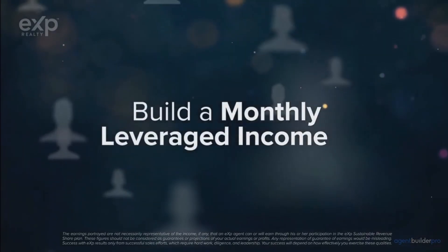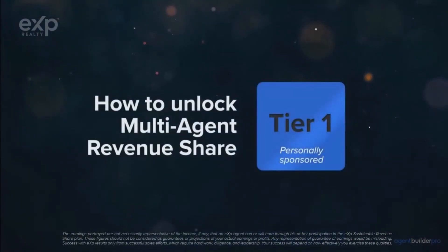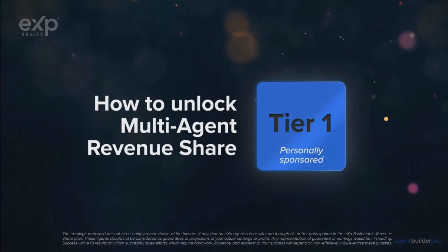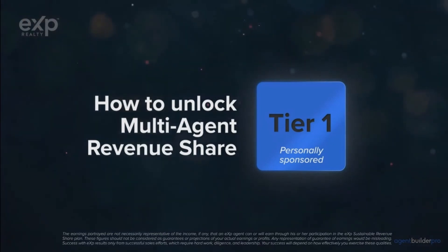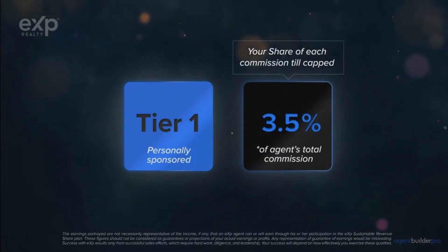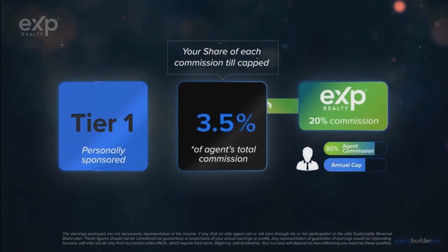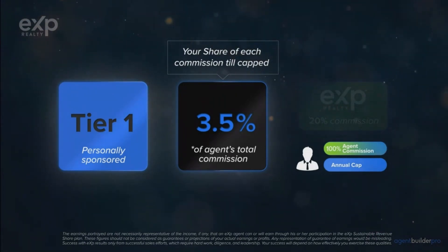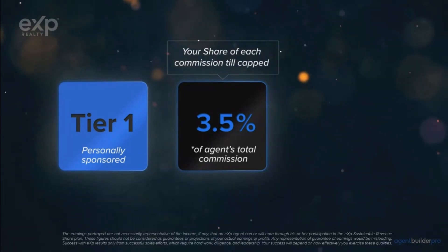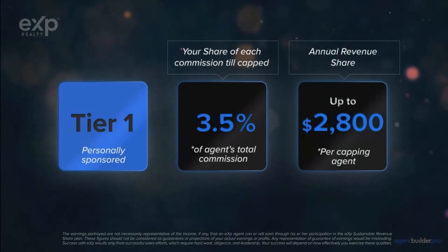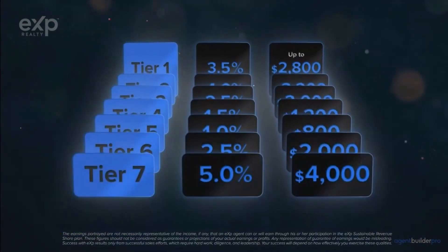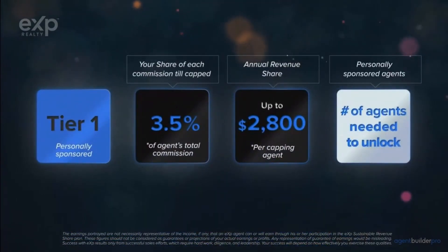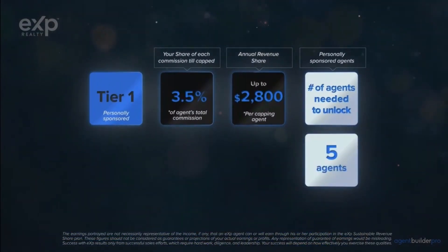One of the most exciting aspects of our compensation plan is our revenue sharing model, which allows you to build a monthly leveraged income by attracting productive agents to the company. Tier one contains the agents you personally attracted to the brokerage — for each transaction on this tier, you get 3.5% of their total commission, taken out of eXp's 20%, not out of the agent's 80%. Once the agent hits their annual cap, they receive 100% of their commissions and you no longer receive income from their deals for the remainder of the year. The maximum you can earn on this tier per agent is $2,800. You can earn on all seven tiers, contingent upon how many agents you've personally attracted and their level of production.